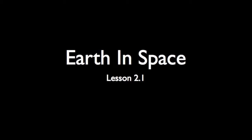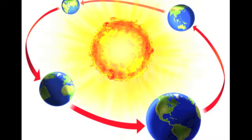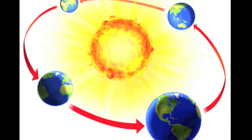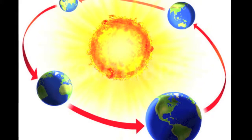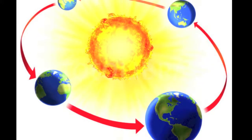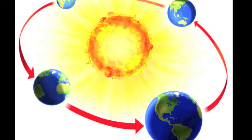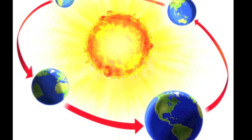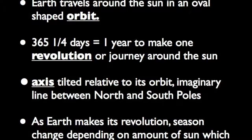Our sun is one of its billions of stars. Even though the sun is about 93 million miles, or 150 million kilometers away, it provides Earth with heat and light. To understand how far Earth is from the sun, consider that this distance is nearly 4,000 times the distance around Earth at the equator. Earth travels around the sun in an oval-shaped orbit, which is the path one object makes as it revolves around another.